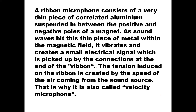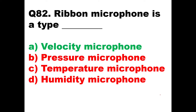If you see the theory: a ribbon microphone consists of a very thin piece of corrugated aluminium suspended between the positive and negative poles of a magnet. As sound waves hit this thin piece of metal within the magnetic field, it vibrates and creates a small electrical signal which is picked up by the connections at the end of the ribbon. The tension induced on the ribbon is created by the speed of the air coming from the sound source, that is why it is also called a velocity microphone. So option A is the right answer here.